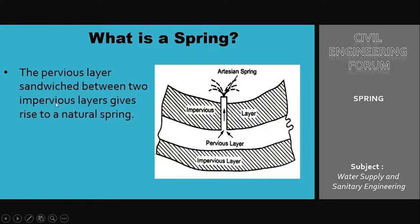A pervious layer sandwiched between two impervious layers gives rise to a natural spring. The pervious layer allows water to pass through it, while the impervious layers do not. So water cannot flow through the top and bottom layers — it can only flow through the middle layer. It gets pressurized, and whenever it finds space to move toward the surface, it does so. This type is known as an artesian spring, which we'll see in detail in the next question.